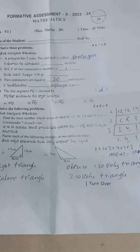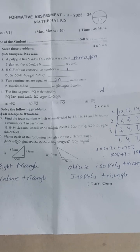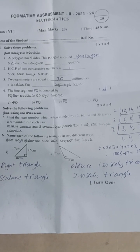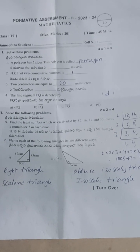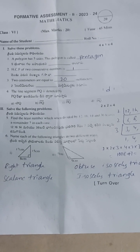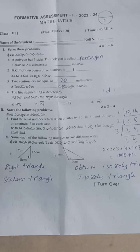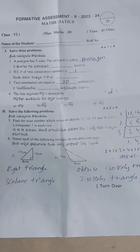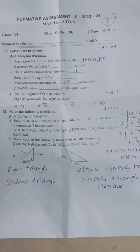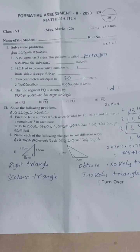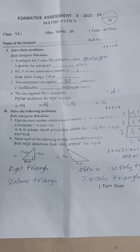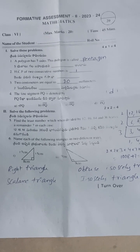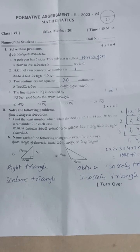The LCF of two conjugate numbers is one. Two centimeters are equal to how many millimeters? One centimeter equals ten millimeters, so two centimeters means 20 millimeters. The line segment PQ is denoted by option D.